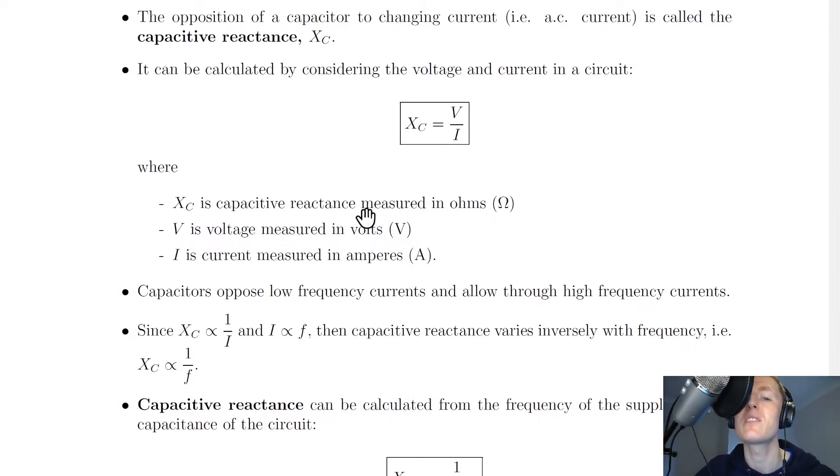Where XC is capacitive reactance measured in Ohms. Again, it's got the same units as resistance. V is voltage measured in volts, and I is the current measured in amperes.